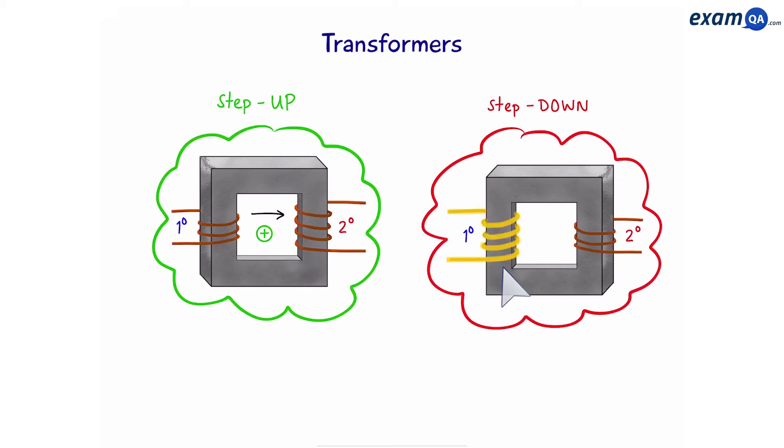In the next one, here's the primary coils and here's the secondary coils. So, the number of coils has reduced. Therefore, it is a step-down transformer. So, as long as you can see the number of coils, from that you can tell whether it's step-up or step-down.